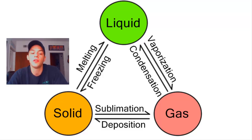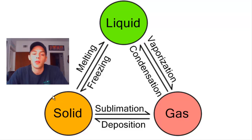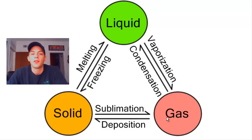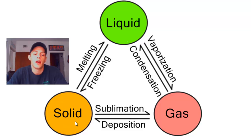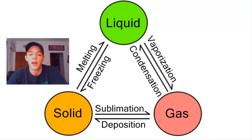There are many terms associated with changes between states of matter. Going from solid to liquid is melting; liquid to solid is freezing. Going from liquid to gas is vaporization; gas to liquid is condensation. It's also possible to go directly from solid to gas without passing through the liquid state — that's called sublimation. A good example is dry ice, which at room temperature and atmospheric pressure goes straight from solid carbon dioxide to gaseous carbon dioxide. Going from gas back to solid is called deposition.